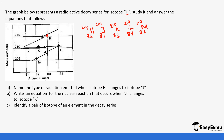What type of radiation is emitted when isotope H changes to J? The mass number decreases by four and the atomic number decreases by two — this matches a helium nucleus, so the radiation is an alpha particle.